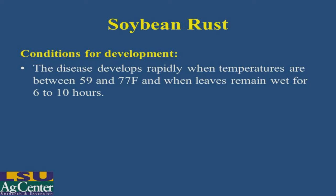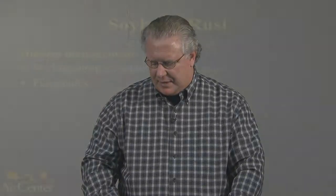As far as conditions are concerned, typically we find that temperatures between 59 and 77 degrees Fahrenheit are best for rust development. The leaves need to remain wet for 6 to 10 hours, but we have found in the last few years that even higher temperatures will support soybean rust development.